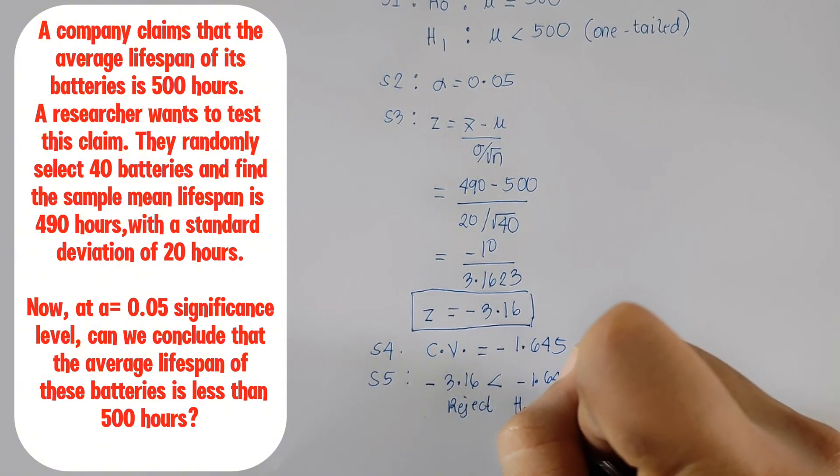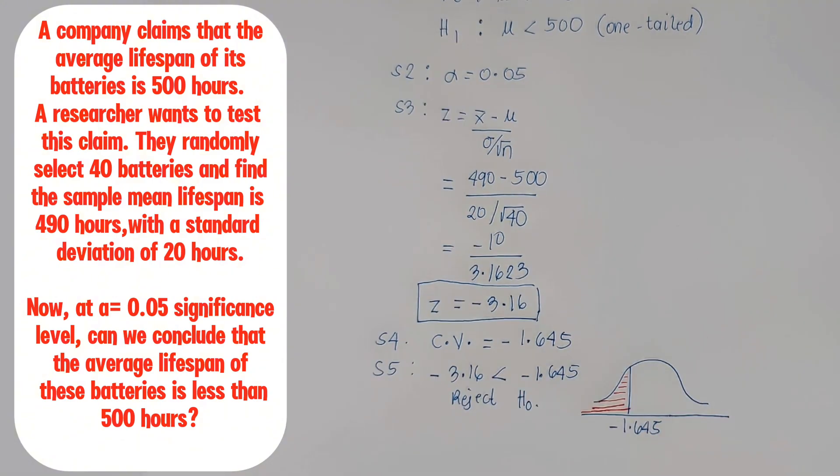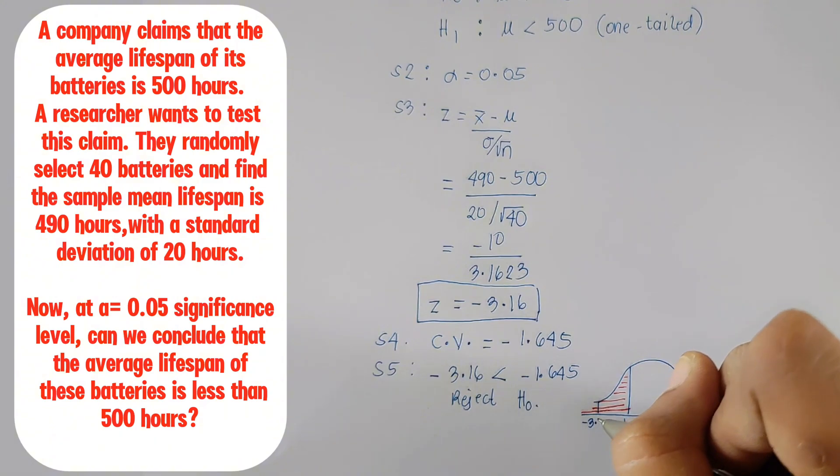If we plot this under the normal curve, negative 3.16 will fall in the rejection region.